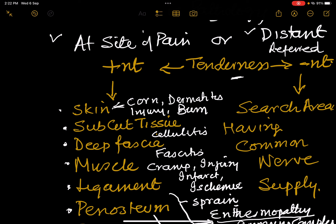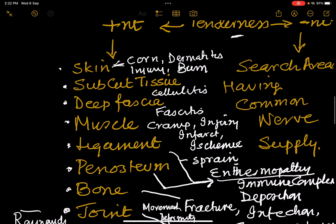Subcutaneous tissue: cellulitis or abscess. Deep fascia: fasciitis. Muscles: cramp, injury, infarct, or ischemia. Ischemic pain in muscles can be due to arterial diseases, which we will discuss shortly. Ligaments where they insert into periosteum: deposition of immune complexes occurs there, and the pathology is called enthesopathy.